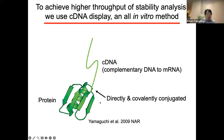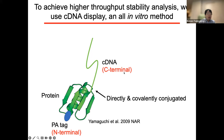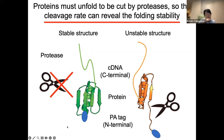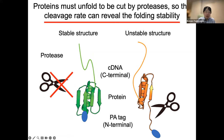Importantly, this conjugation is direct and covalent, so it remains intact even under very harsh conditions such as very high temperature or very low or very high pH. More importantly, this cDNA is always attached to the C-terminus of the protein during the translation step. We added a His-tag on the N-terminus for purification of the protein. Then we utilize proteases such as trypsin or chymotrypsin to quantify the folding stability of proteins. Basically, proteases can only cleave the unfolded region or unfolded state — they cannot cleave stable structures very easily, while they can quickly cleave unstable structures.